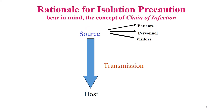Rationale for isolation precaution. If you remember the chain of infection discussed in lecture 3, the reservoir or source of infection can be infected humans - patients, healthcare workers, admin staff, technical staff in the hospital, or visitors and relatives coming to visit the patient. They could be bringing diseases into the hospital, which can then be transmitted to the host. The host could be patients, healthcare workers, or even visitors.